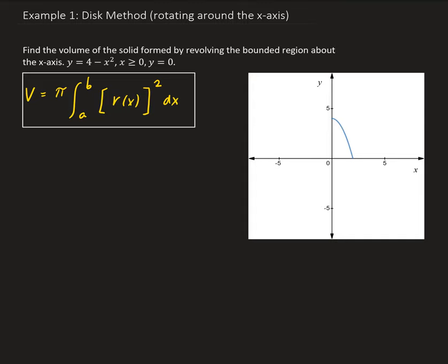In this example, we want to use the disk method to find the volume of the solid formed by revolving the bounded region about the x-axis.